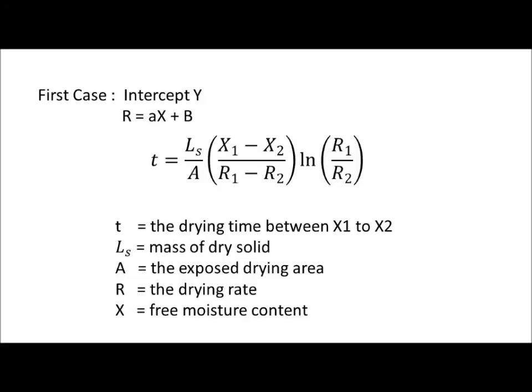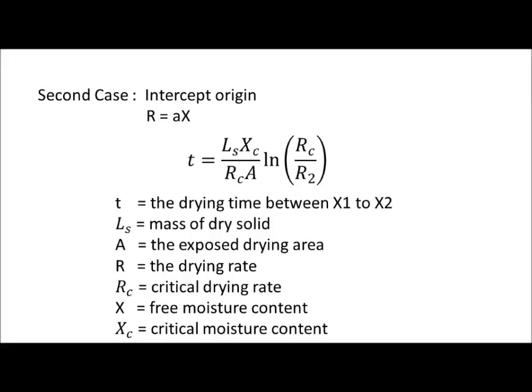Next is to consider falling drying rate, R, as a linear function passing through origin of the curve, R equals a times x, where the gradient, a, equals to Rc over xc. So, drying time, t, can be found using this formula instead.